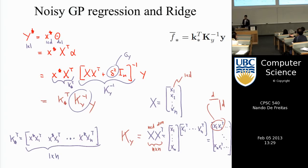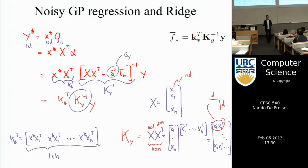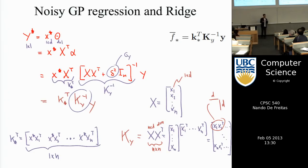You need to tune delta^2 and the kernel width. If you have only two parameters, cross-validation does the trick — provided you have enough data. Maximum likelihood is also only efficient with lots of data. Paucity of data causes problems; Bayesian ways exist to deal with this but require techniques not yet discussed.